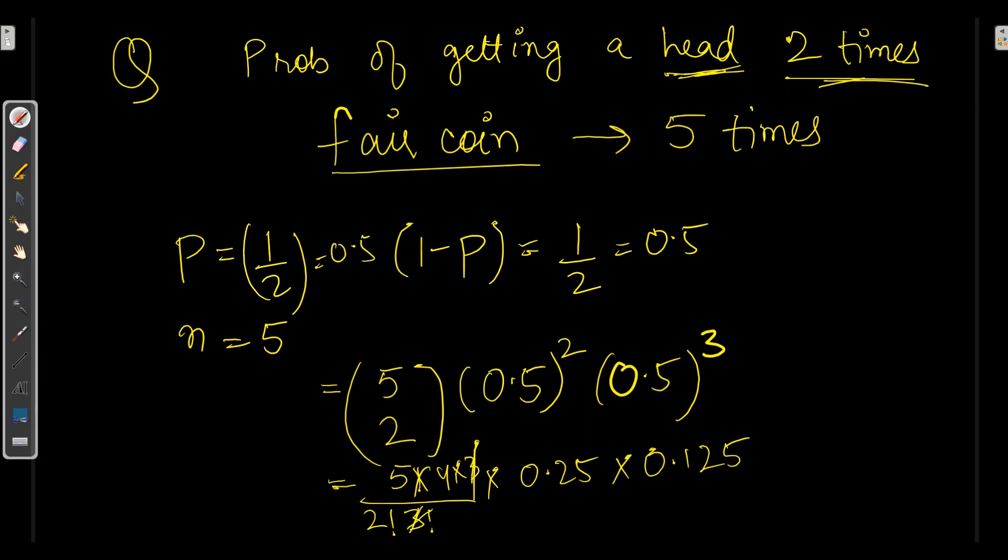Now when we open up this, 3 will cancel. And here 2 times 4, so we got 10. After calculating this, we will get 0.312. So we can say probability of getting two heads in five tosses will be 0.312.